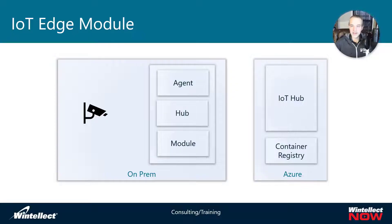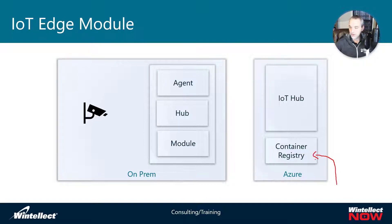Last time we looked at IoT Hub modules and talked about the workflow to get an IoT module deployed. To review: we have a container registry where we push an image from a dev environment or through a CI/CD pipeline, done via docker push. Then we push the manifest up to IoT Hub, which informs the agent to pull that image.